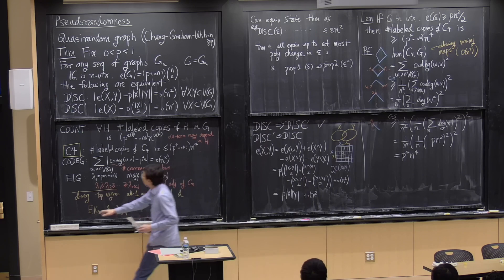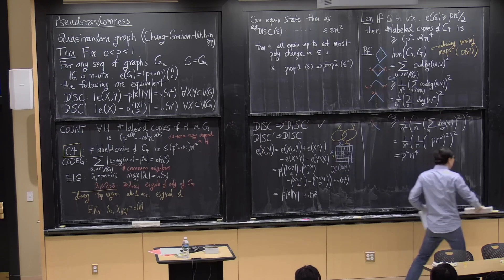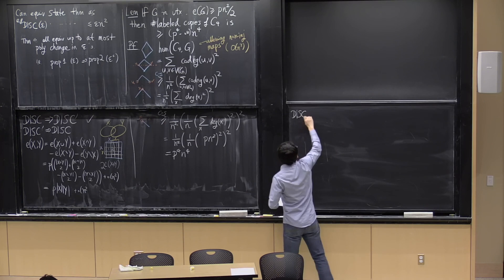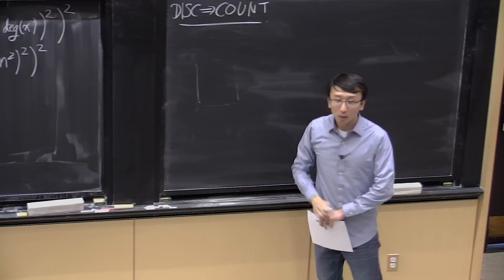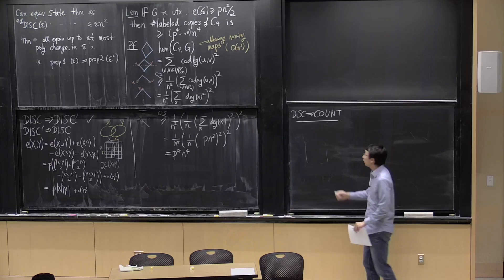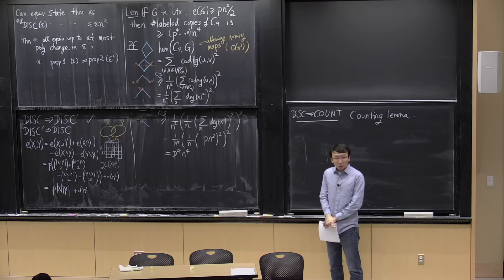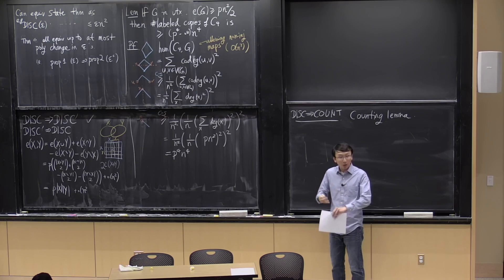Moving on to COUNT: to show DISC implies COUNT, we already did this — that's the counting lemma. The counting lemma tells us how to count labeled copies of H if you have these epsilon-regularity conditions, which is exactly what DISC is. And COUNT implies C4 is tautological: the C4 condition is a special case of the COUNT hypothesis.